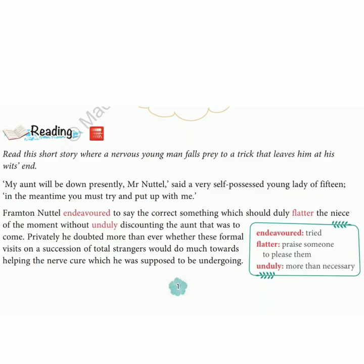Frampton Nuttel carries those letters of introduction to different houses — people his sister had known earlier, so they can take care of him. He comes to the village and visits one such house, where the story starts. His aunt will be down presently, said a very self-possessed young lady of fifteen. In the meantime, you must try and put up with me. Mr. Nuttel comes to make friends with a lady called Miss Sapleton, but is greeted by this young lady of fifteen.